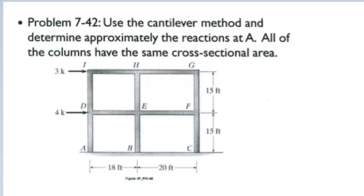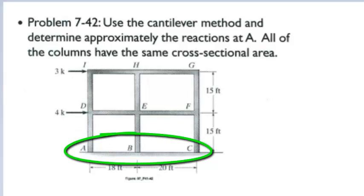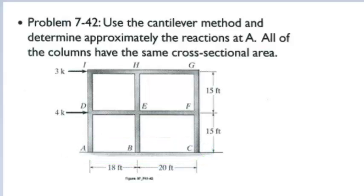In this example, we will use the cantilever method to solve the reactions at support A of a two-story moment frame. Supports A, B, and C are fixed, and all joints in the frame are fixed connections. The cantilever method is an approximate method to solve statically indeterminate moment frames by making assumptions of vertical load in the columns in order to reduce the moment frame to a statically determinate structure.